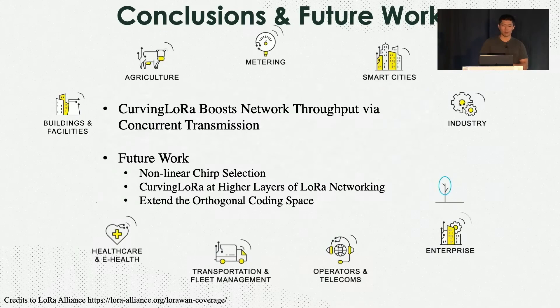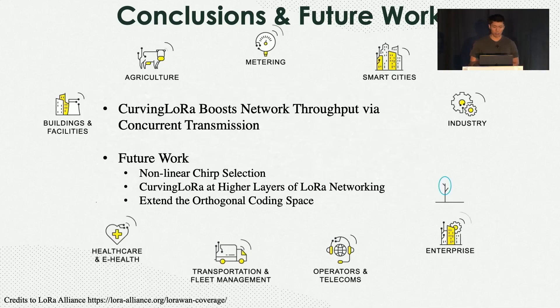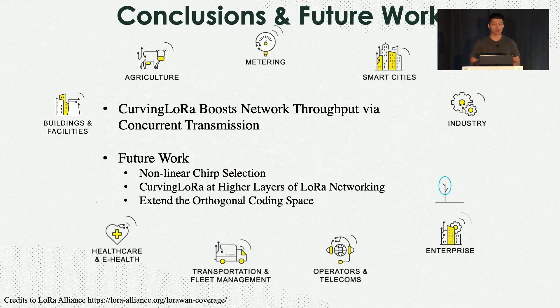In conclusion, Curving LoRa proposes a new physical layer design — non-linear chirp modulation — to boost network throughput with concurrent transmissions. For future work, we plan to explore non-linear chirp selection, integration of Curving LoRa with higher layers of LoRa networking, and most importantly, how to utilize the orthogonality of different types of chirps to extend the orthogonal coding space for LoRa networking.